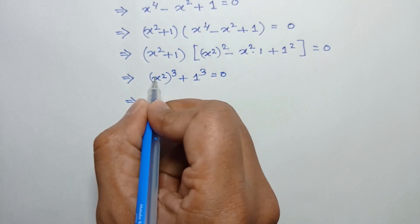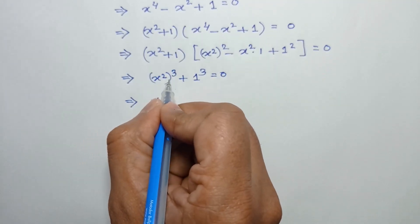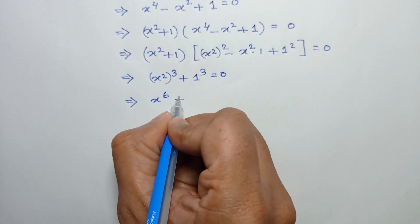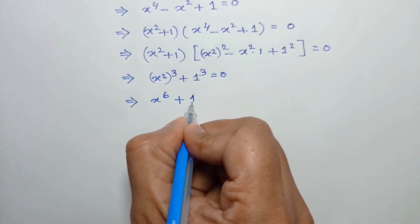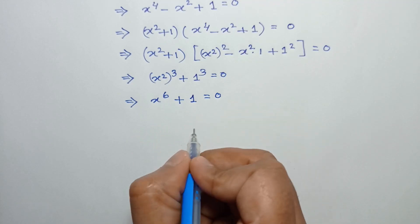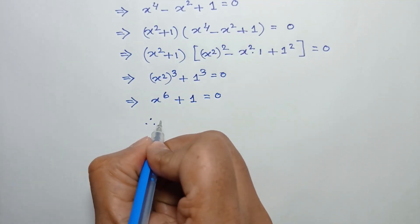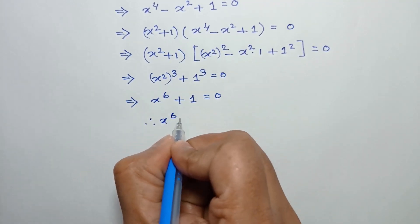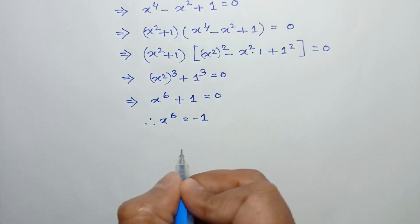So x square cubed is x to the power 2 times 3, which is 6, plus 1 cube is 1, equal to 0. Therefore, the value of x to the power 6 is negative 1.